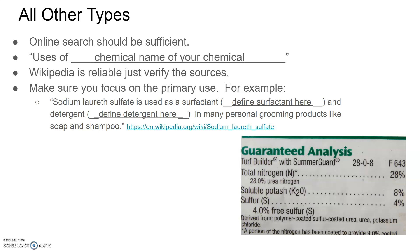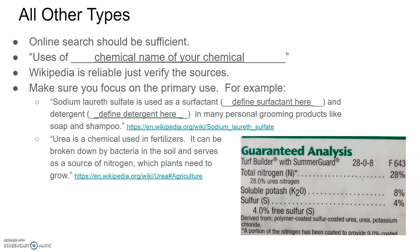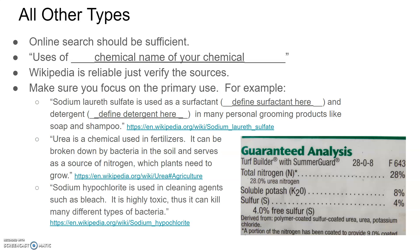Let's say you're doing something like urea. Urea has multiple uses, but if you found urea on the side of a fertilizer container, you want to focus on that. In this case, I would say: urea is a chemical used in fertilizers — it can be broken down by bacteria in the soil and serves as a source of nitrogen, which plants need to grow. And for sodium hypochlorite: sodium hypochlorite is used in cleaning agents such as bleach. It is highly toxic, and thus it can kill many different types of bacteria. Most of that came from Wikipedia, but written in my own words.